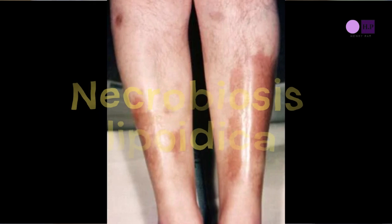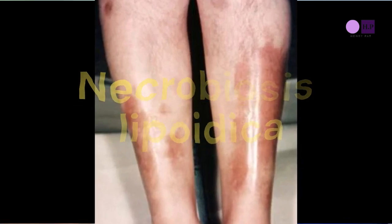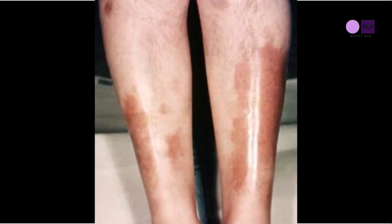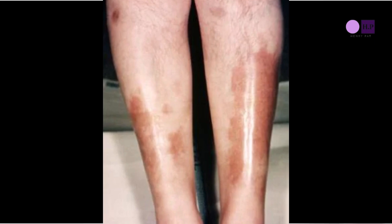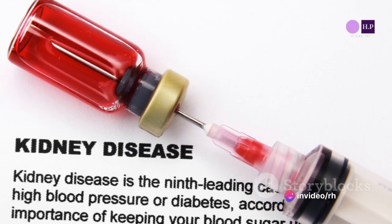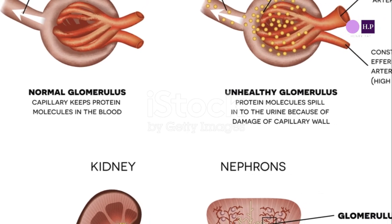Necrobiosis lipoidica is another condition often seen in diabetics. It manifests as yellow, waxy plaques on the shin, often with a purple border. Though it's not painful, it can be a cause of concern due to its appearance. Diabetics with renal failure may experience reactive perforating collagenosis and curl disease, causing protruding nodules or lesions on the skin, which can be uncomfortable and may result in scarring.